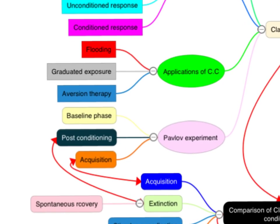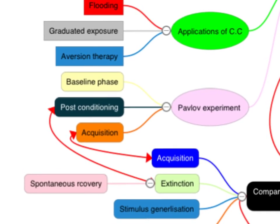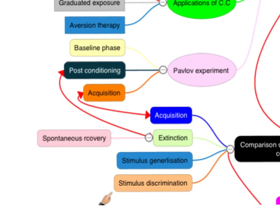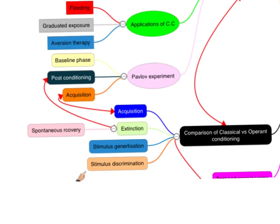In this clip, I'm just focusing on the three stages of Pavlov's experiment. And in a future clip, we'll look at extinction, stimulus generalisation, stimulus discrimination, and spontaneous recovery in a comparison with operant conditioning.